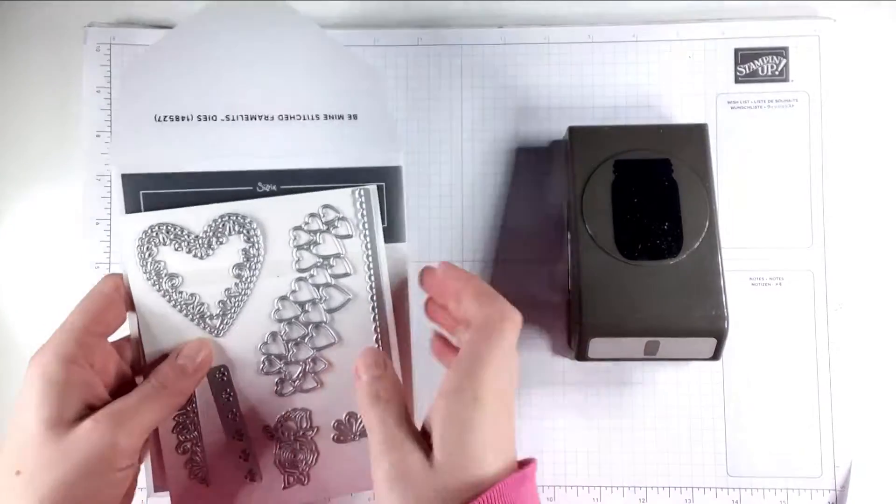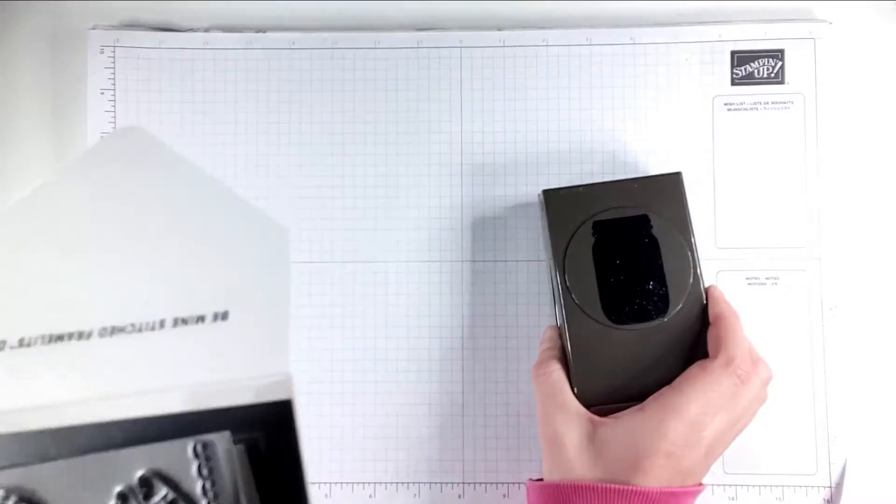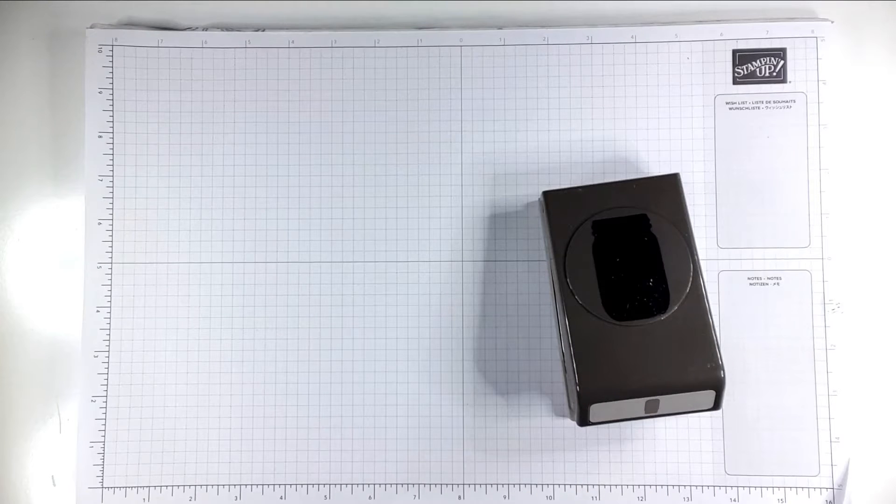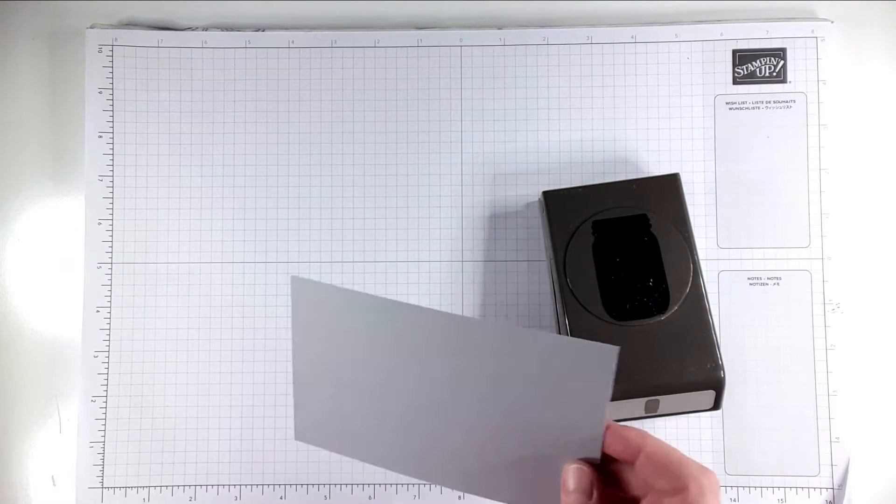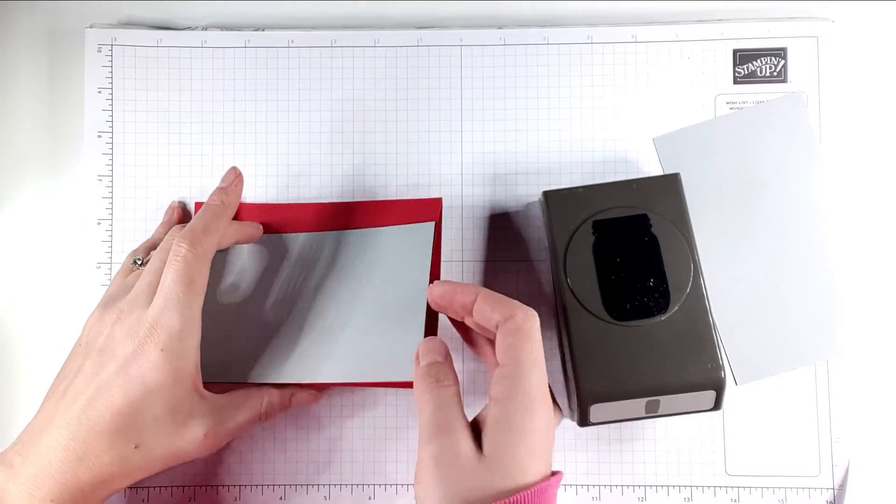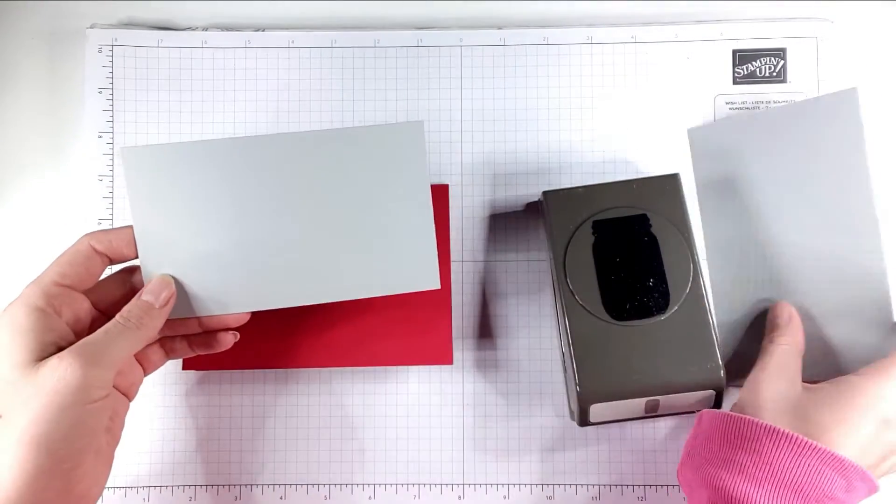I'm also going to be using this punch from the jar of flowers, but today we're going to have a jar of hearts. In fact, we're going to have three jars of hearts. So for my card I've got a red A6 card base.